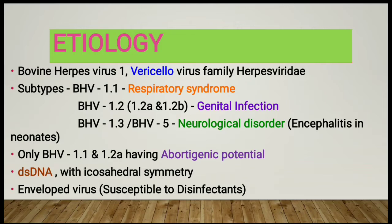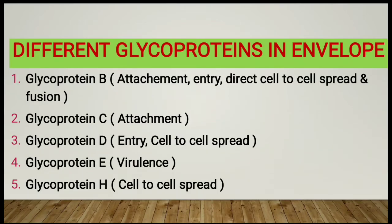It has a genome of double-stranded DNA with icosahedral symmetry, and being an enveloped virus it is susceptible to disinfectants. The virus envelope has different types of glycoproteins: glycoprotein B, C, D, E, and H.